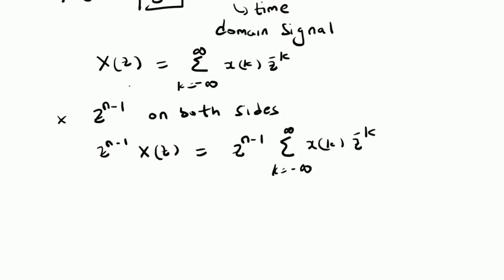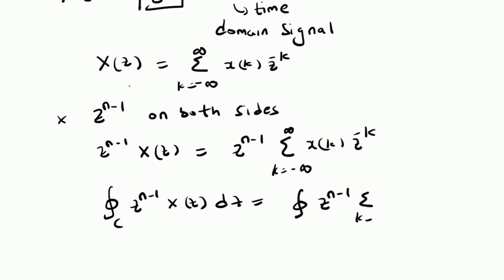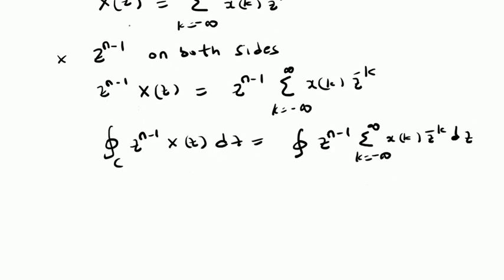We apply closed contour integration on both sides — that is, we apply closed contour integration over the contour C. So the integral of Z power n minus 1 times X of Z dz over the closed contour C equals the integral of Z power n minus 1 times the summation k from minus infinity to plus infinity of X of k times z power minus k dz.